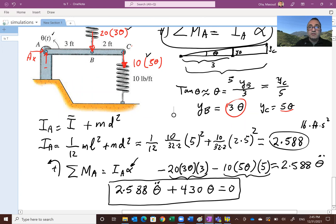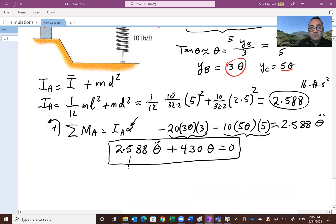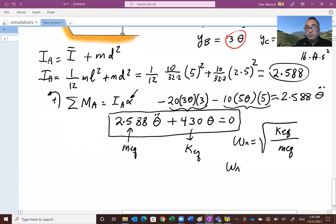This is your equivalent mass moment of inertia, and this is your equivalent k. Natural frequency omega_n is the square root of k_equivalent over mass_equivalent. If you do this, 430 divided by 2.588, the natural frequency comes out to be about 12.89 radians per second.